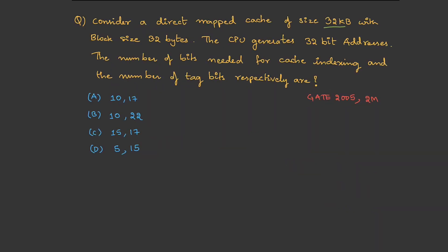Consider a direct mapped cache of size 32 KB with block size 32 bytes. The CPU generates 32-bit addresses. The number of bits needed for cache indexing and the number of tag bits respectively are — this is a question asked in GATE 2005 for two marks. We need to find the cache index (CI) bits and the tag bits.